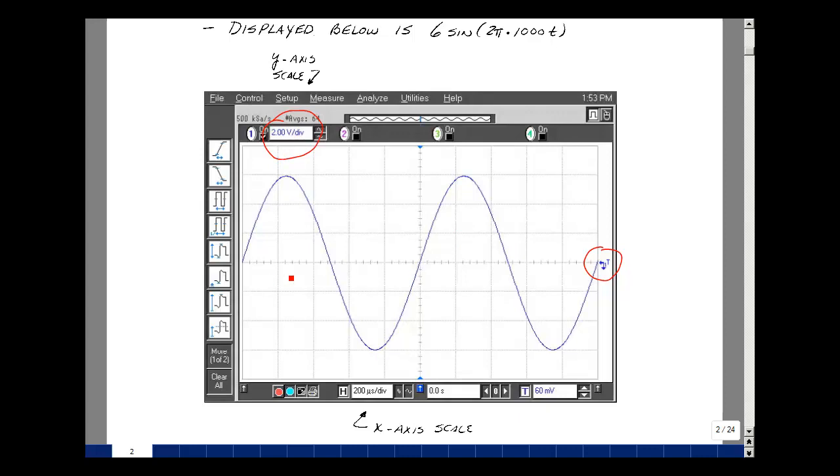In terms of the period, we have one, two, three, four, five major divisions. And then here is the scale per major division. So five times 200 microseconds per division would be 1000 microseconds, or one millisecond. And the reciprocal of that would be a frequency of one kilohertz. This is shown at the bottom of the page with the details of the calculations.